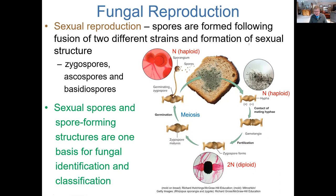Mycologists — scientists who study fungi — identify and classify fungi by looking at spore-forming structures, the life cycle of the fungus, and other advanced genetic testing. This helps them understand not only how to classify a particular fungus but also how it might be related to other types, giving an idea of their evolution.